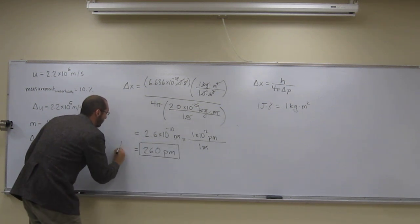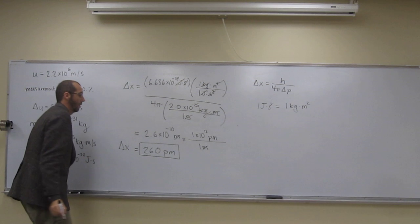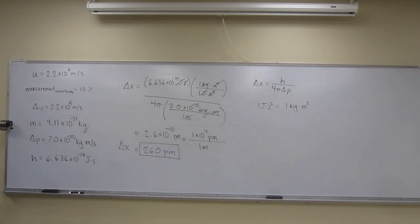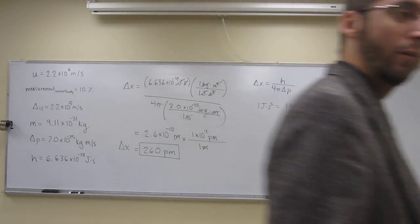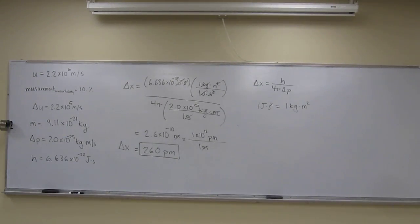So, that would be the uncertainty in the position of this electron. So, just go through those steps. Probably the biggest problem will be to remember those formulas. Any questions on this? Okay, wonderful. Thank you.